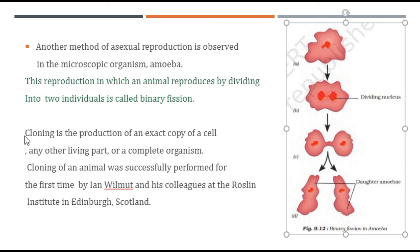Cloning is the production of an exact copy of a cell, any other living part, or a complete organism. Cloning of an animal was successfully performed for the first time by Ian Wilmut and his colleagues at the Roslin Institute in Scotland. There are two types of asexual reproduction we studied: one is budding and the second is fission. That is all for today — thank you for watching, please like, share, and subscribe.